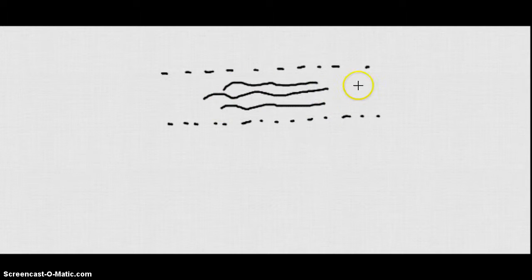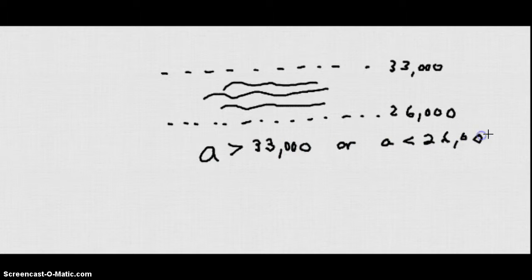So let's say that there is a dangerous spot in the air where an airplane shouldn't fly because there is too much turbulence. Let's say this danger zone is in between 33,000 feet and 26,000 feet.